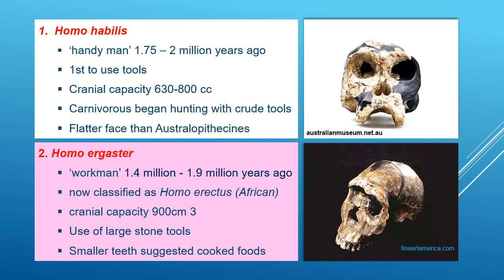The first important member is Homo habilis, the 'handyman,' which arose about 1.75 million years ago. It was the first to use tools, had a cranial capacity larger than Australopithecus, and is assumed to have been carnivorous and able to hunt with crude tools. Homo ergaster, the 'workman,' had most fossils discovered in Africa and is now classified as an African subspecies of Homo erectus. They had a larger cranial capacity, used large stone tools, and their smaller teeth suggest they probably knew the use of fire and cooking.